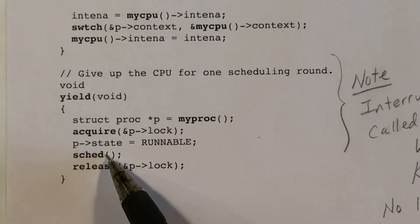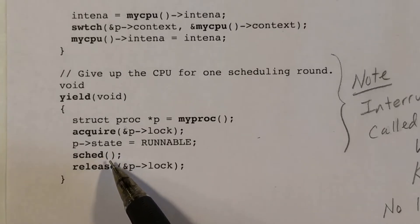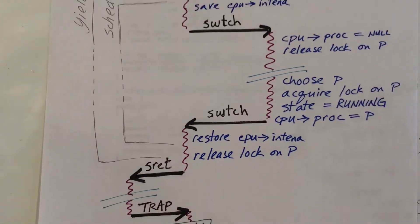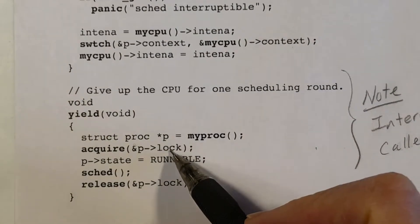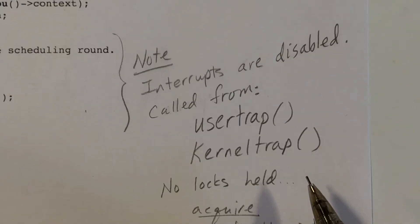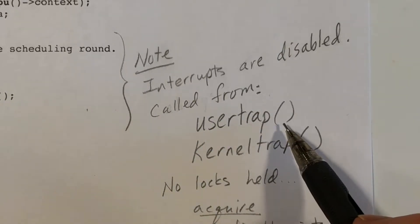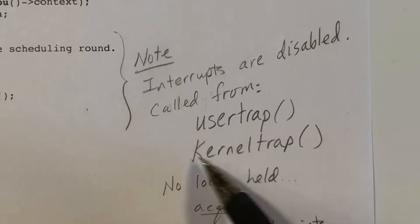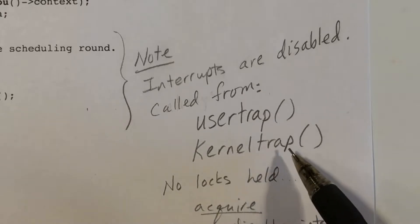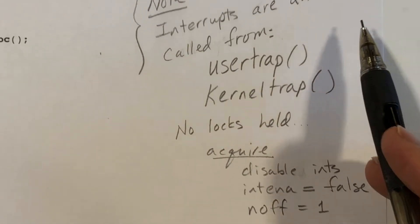Then we call SCED, go away, and maybe quite a while later — after some other processes have had time slices — the scheduler function will call switch again and we'll return back to this thread. So at some point, SCED will return, and at that point we release the lock we acquired. Yield is called in exactly two places: from user trap and kernel trap. Whenever a trap occurs with a timer interrupt, yield is called. Interrupts will be disabled and no locks will be held at that time.